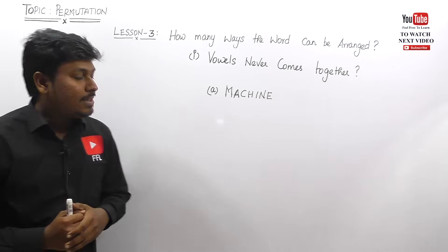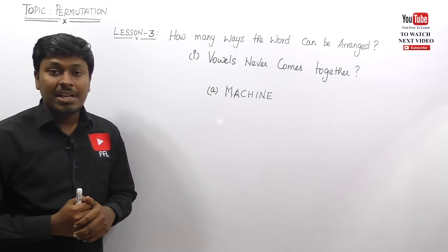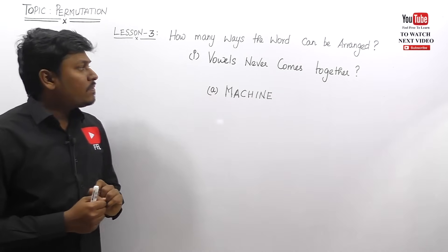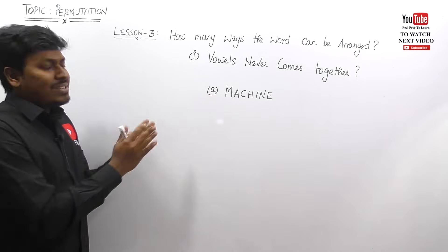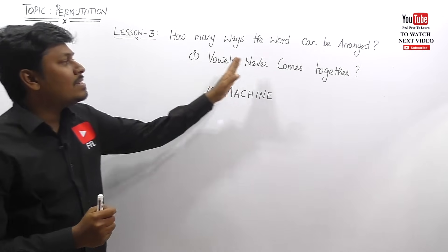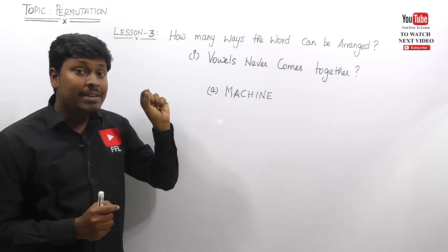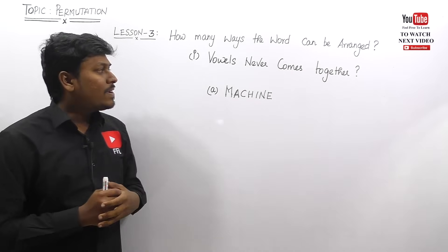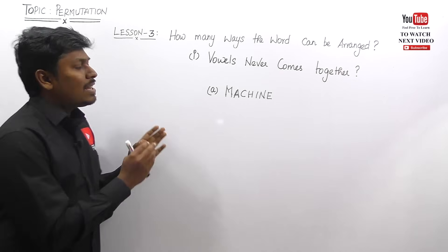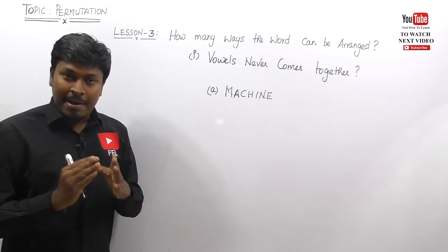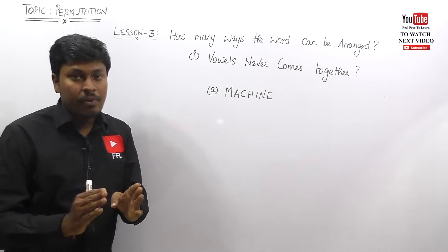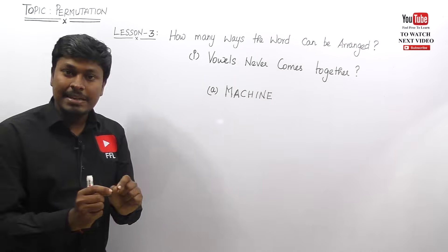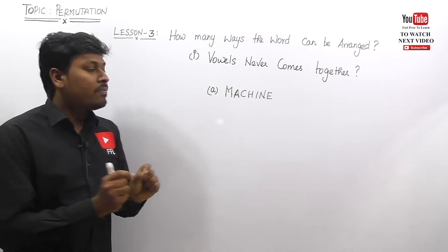Let me move on to lesson number three, where the condition is: vowels never come together. This question follows a similar pattern — how many ways can a word be arranged — but with the condition that vowels should never come together. For these types of questions, there are many different ways to solve this, but my advice is: don't learn any formulas. Learning lesson one and lesson two is more than enough to crack lesson three.